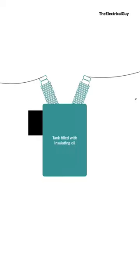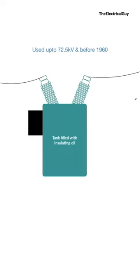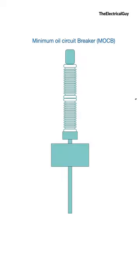Oil circuit breakers are composed of a steel tank which is filled with insulating oil completely. The breaker contacts separate and the current interruption takes place within the tank filled with insulating oil. This type of tank arrangement was used only up to 72.5 kV and before the 1960s.